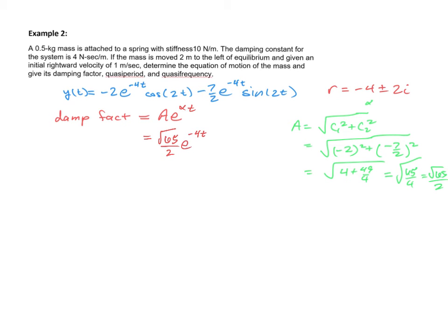Next we're going to find the quasi-period, which is equal to P. That's 2 pi over the value of beta, which is the imaginary part of our complex number. So that's 2 pi over 2, or just pi.